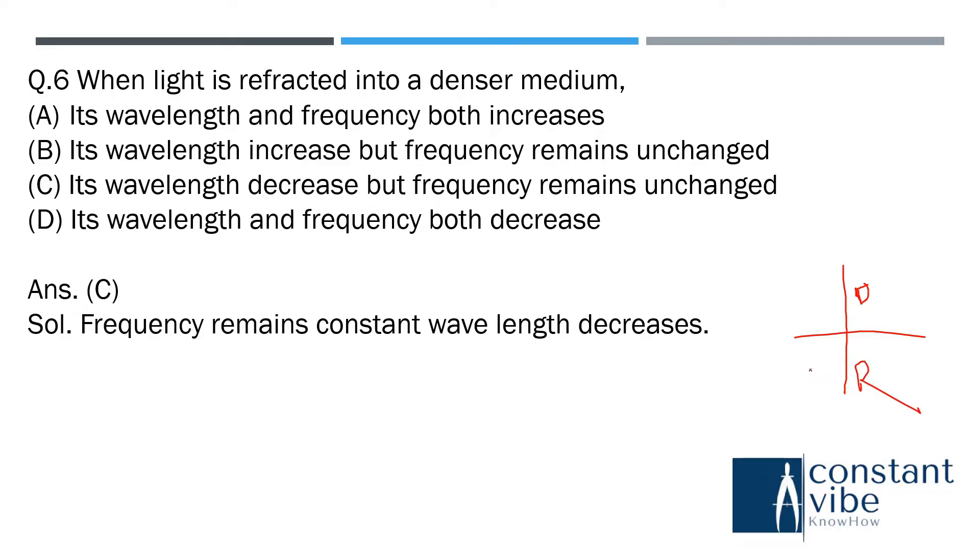If the light comes from here, from here it will go in the perpendicular direction. It is deviated to here, so from here to here. So the frequency, the frequency remains constant.